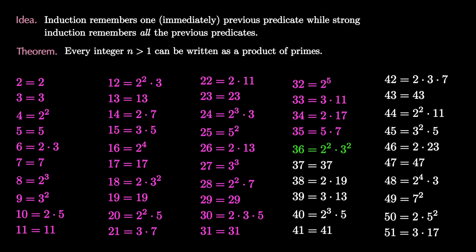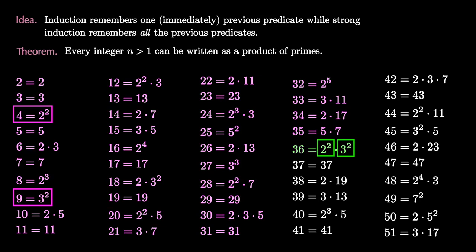Instead, strong induction helps us remember all of the previous prime factorizations, and we see that because 36 is 4 times 9, we get the prime factorization for 36 as the prime factorization of 4 multiplied by the prime factorization of 9.